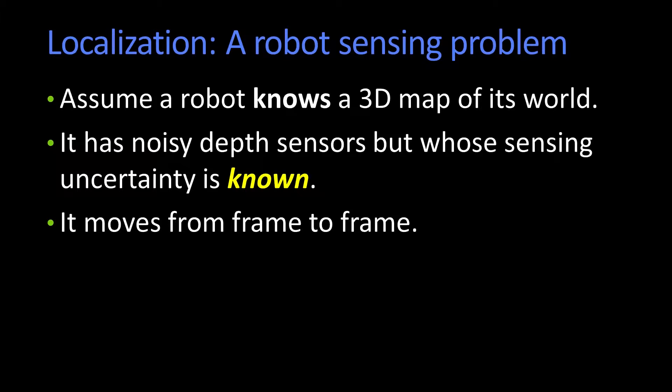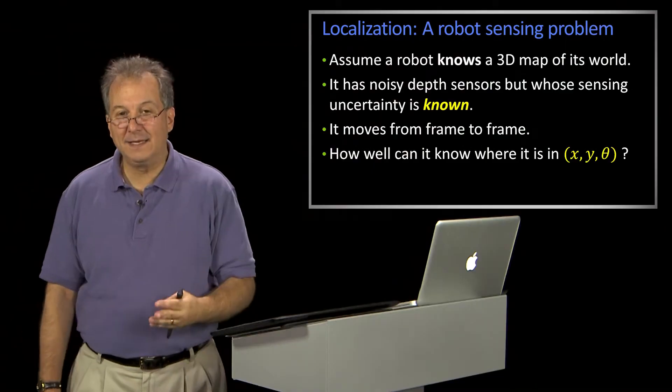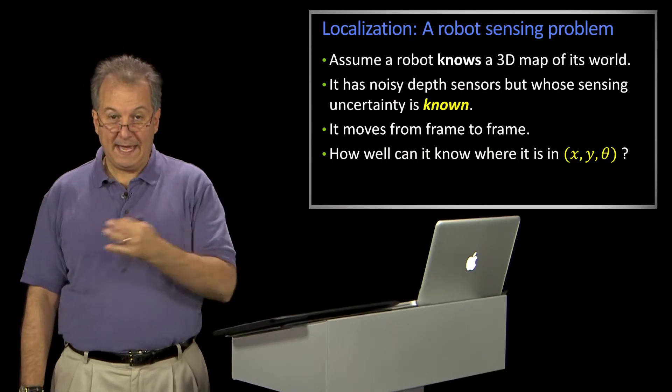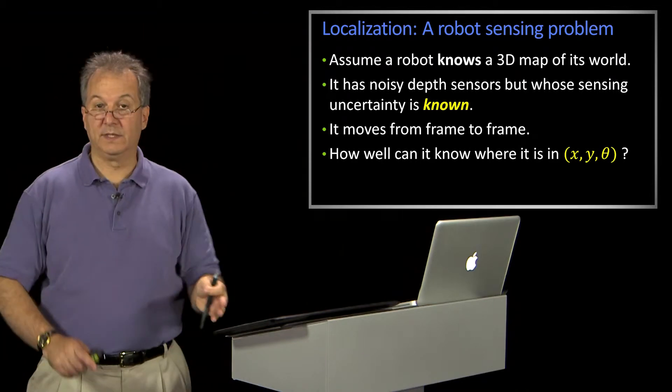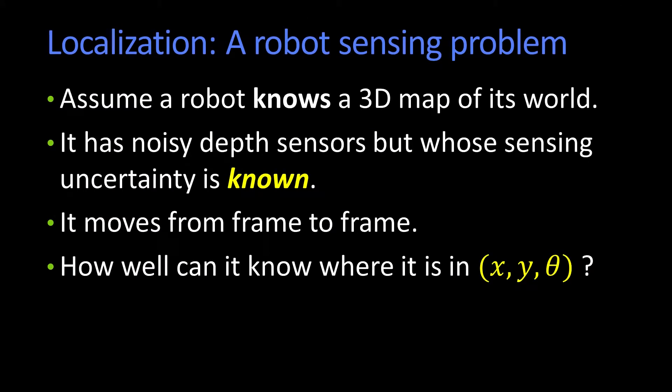And the question is, how well can it know its state? So what is its state? Montana, no. Its state is three values, x, y, and theta, its orientation, okay? That's why we're just doing a mobile robot on the ground, three dimensions, all right?